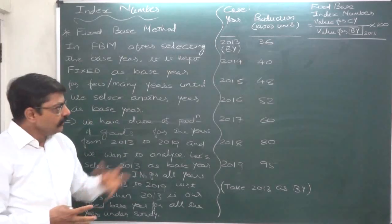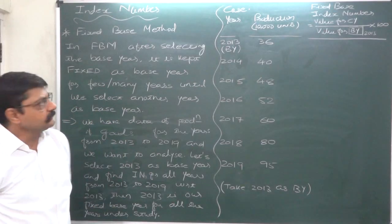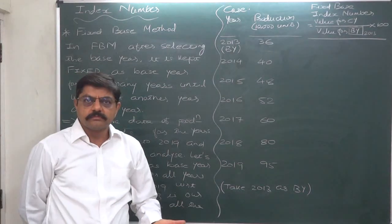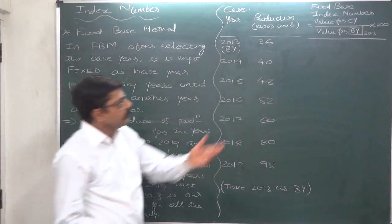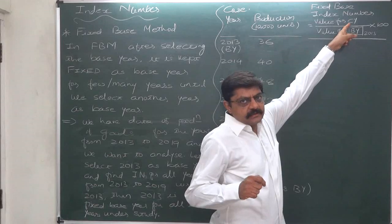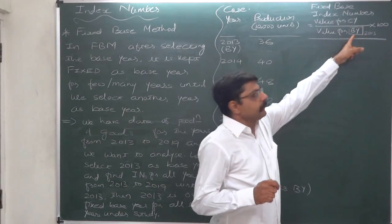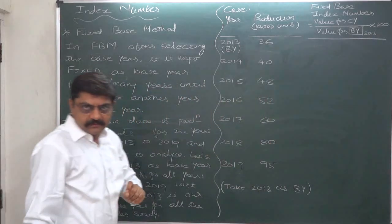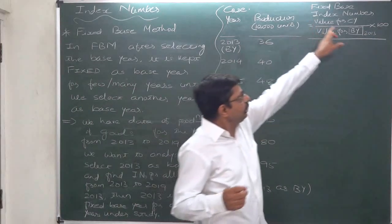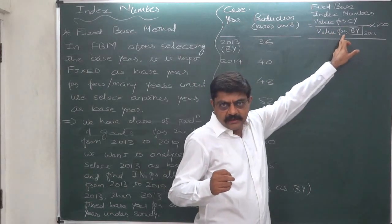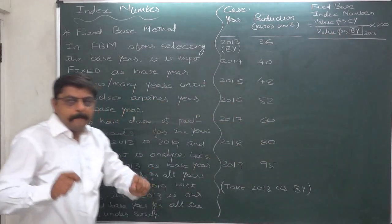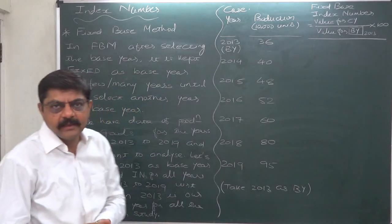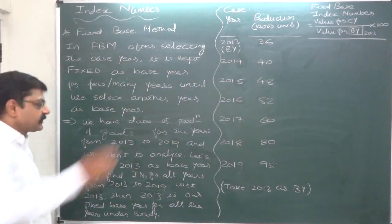Now, how do we calculate the index number under the fixed base method? The formula is: index number equals the value for the current year divided by the value for the base year (2013), multiplied by 100 to get the percentage. The index number is the ratio of the value for the current year to the value for the base year, and we multiply by 100 to make comparison and understanding easier.